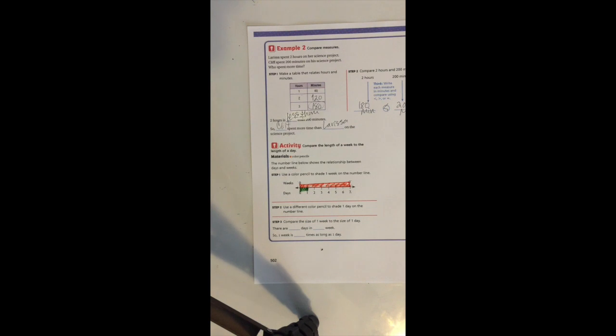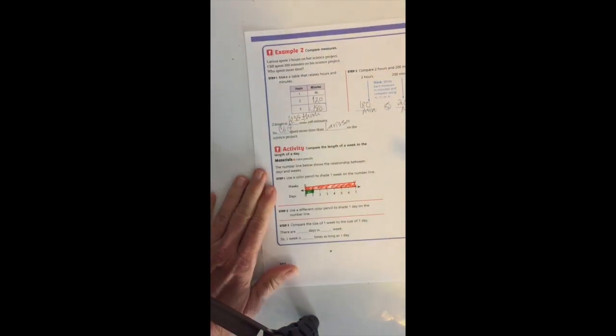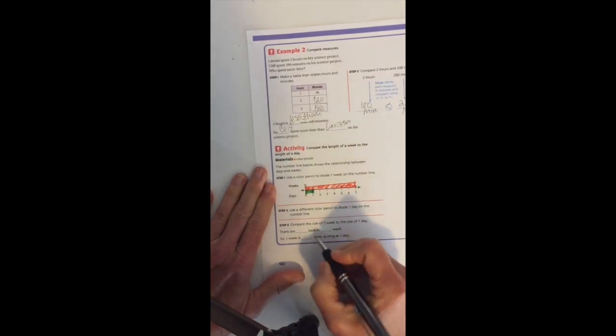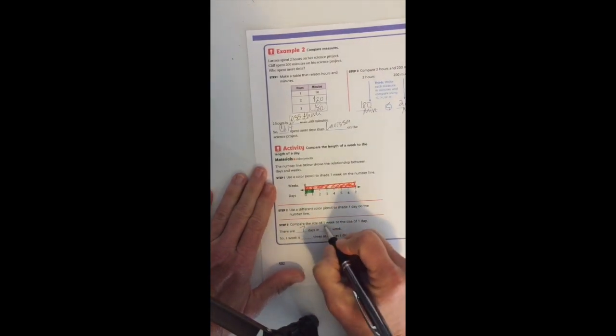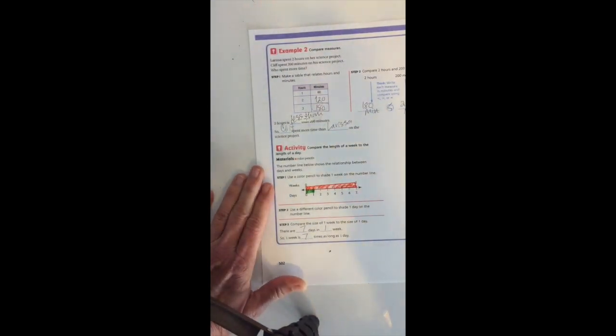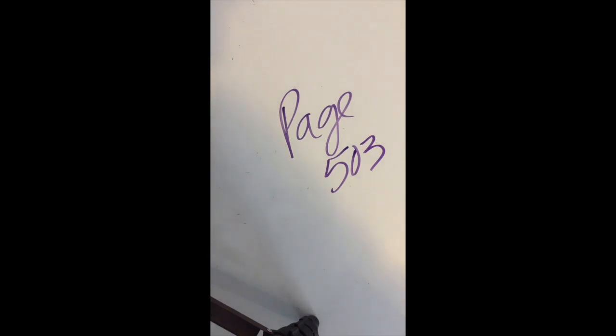Well, how much longer is one week than one day? There are seven days in one week, so we say that one week is seven times as long as one day. Keep your colored pencils out, work on page 503 and check your answers with the attached key, and then the same thing with the practice page. Good luck.